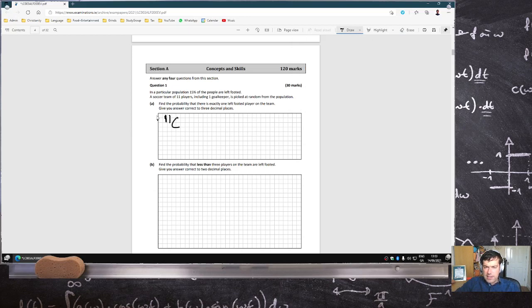That's 11C1, 0.15^1, 0.85^10. And switch to three decimal places. Three, two, five.